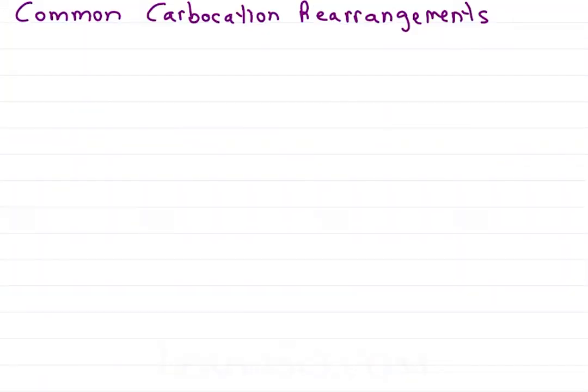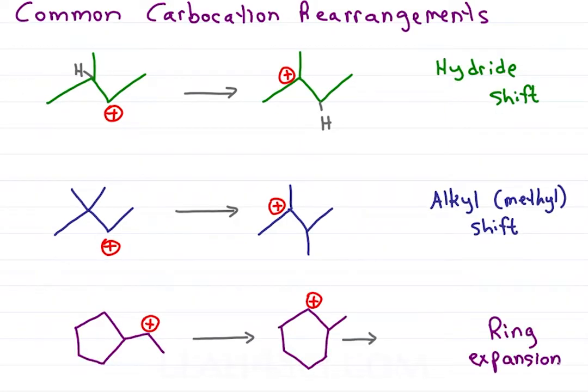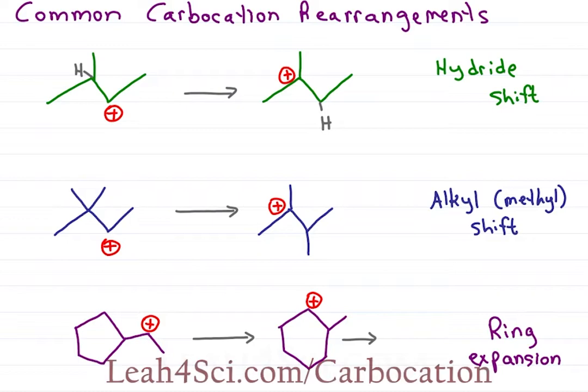The three most common carbocation rearrangements include the hydride shift, the alkyl or methyl shift, and the ring expansion, which can then undergo another hydride shift as I explain in the video link below.